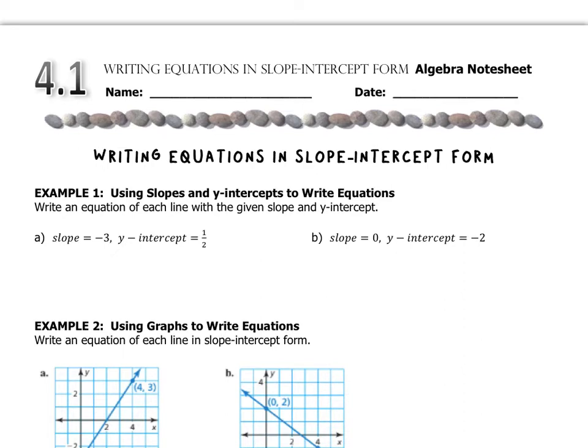But before we do that, let's just refresh some memories about y equals mx plus b. Remember the formula, the slope goes right in front of the x and the b is the y-intercept and that gets added on separately.